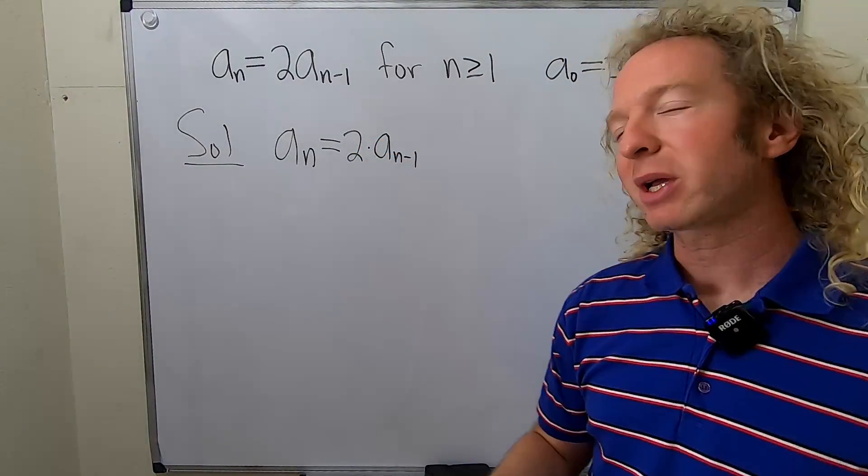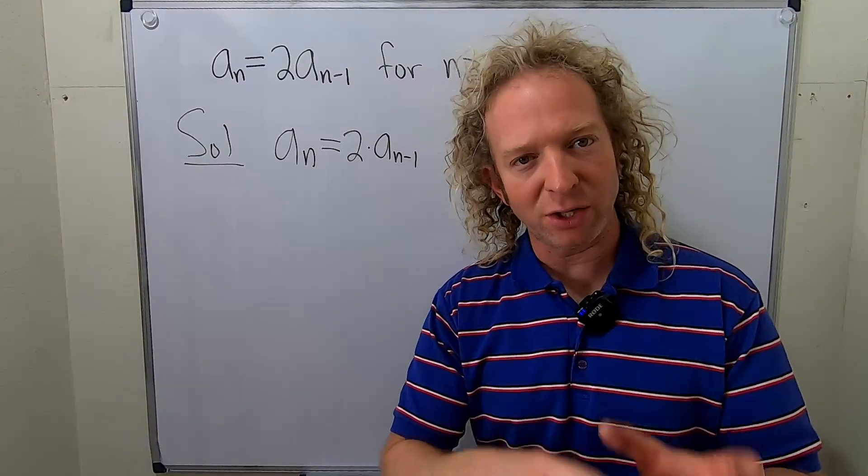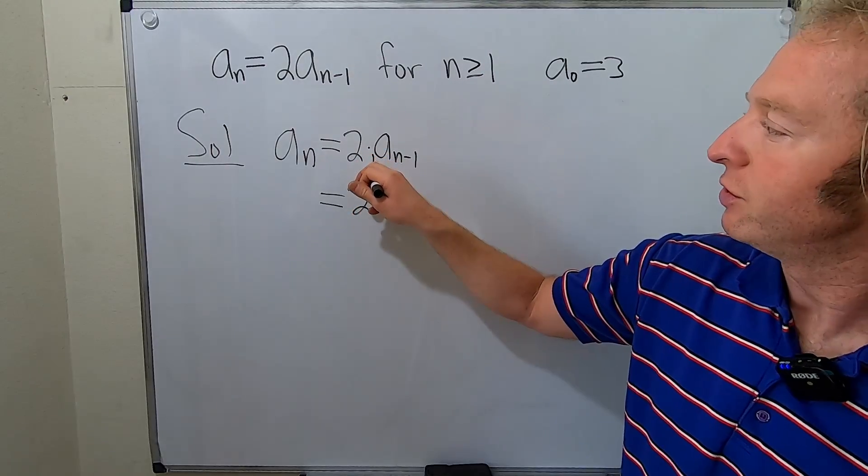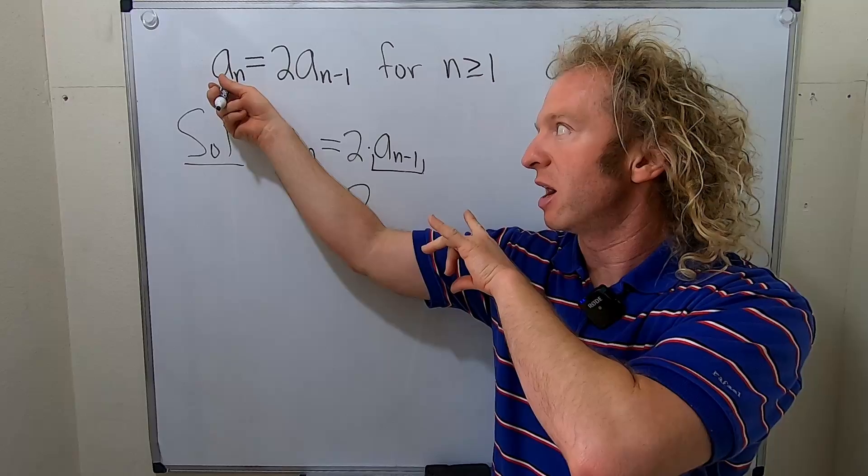So the method is called backtracking because that's what you actually do. You go back and backtrack. So what do I mean by that? Well, watch. You just take this and then you use this. So you're backtracking.